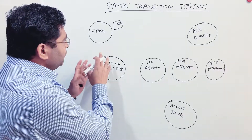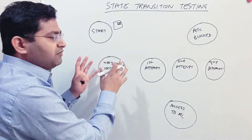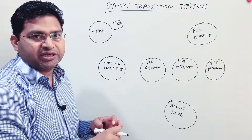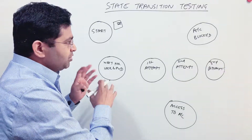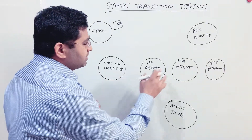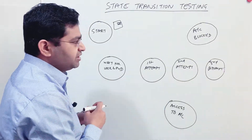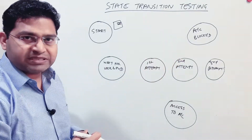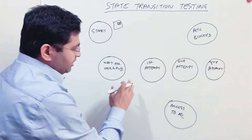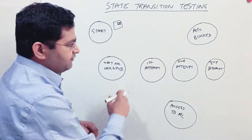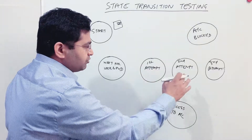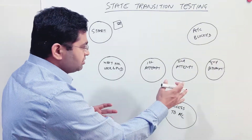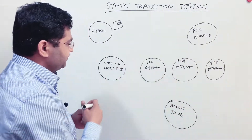At a high level, these are the states for the login functionality of the banking application. The account blocked state is reached after three wrong attempts, and the access to account state is reached if the user provides correct username and password in any of these attempts.